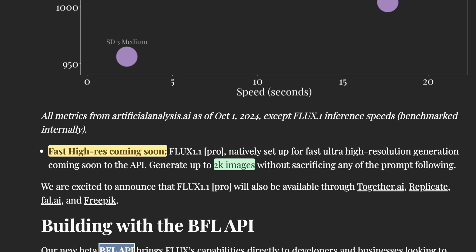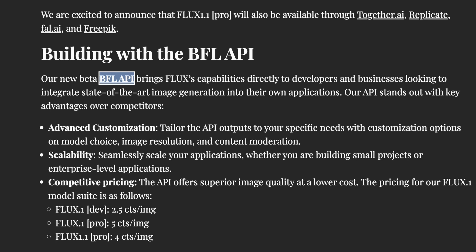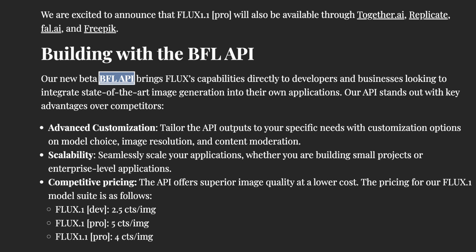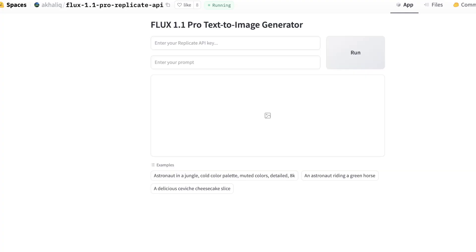There are some really interesting features coming within the next few weeks. One big one is fast high resolution — natively set up for fast ultra-high-resolution generation coming soon to the API, generating up to 2K resolution images without sacrificing any of the prompt. On launch day, this model is available with Together AI, Replicate, FAL.ai, and Freepik. The BFL API pricing is really the biggest draw, and it's likely a great way for them to generate revenue while developing models — which may answer how they plan to monetize, where Stability AI ultimately couldn't. They're also looking to hire developers.